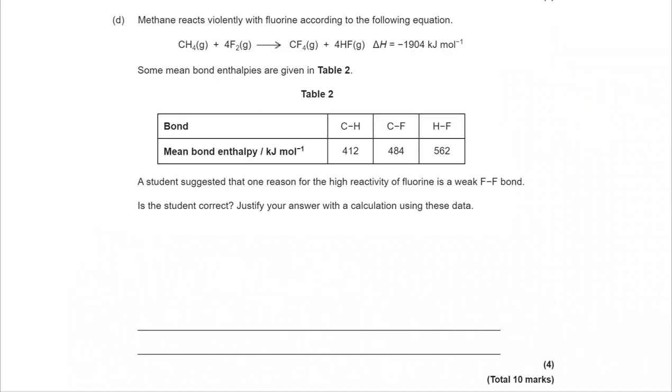Finally, moving on to part D, we have some mean bond enthalpies. Methane reacting violently with fluorine, we've got an enthalpy change for it. A student suggested that one reason for high reactivity of fluorine is a weak F-F bond. Is the student correct?